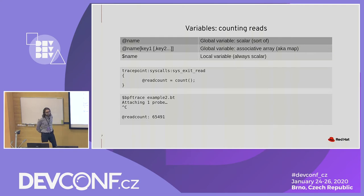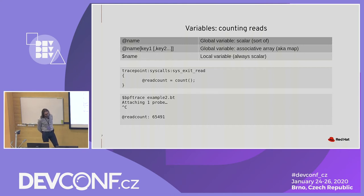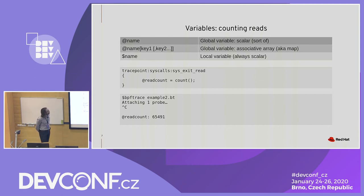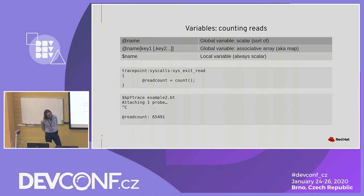Now let's look at how variables work in BPF trace. There are local variables and global variables. For global variables, you have two types: scalar variables, and associative arrays — which we also call maps. A map is an array that associates some value with keys. To be honest, scalars are actually also implemented as associative arrays, but we just happen to access them by the zero key. For practical purposes, we can consider them scalars.